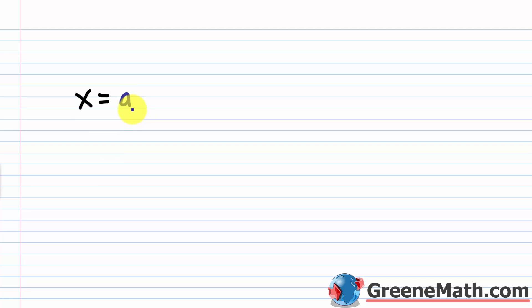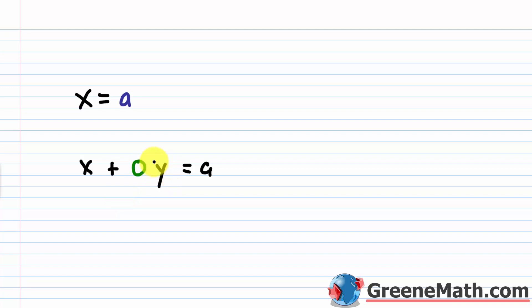A lot of people ask: where's y? There's no y involved in this equation. We can use a little trick and write this as x plus 0 times y equals a. Now I've written it as a linear equation in two variables and I can put it on the coordinate plane. No matter what I choose for y, I'm multiplying it by 0, so it goes away and x just equals the real number a.